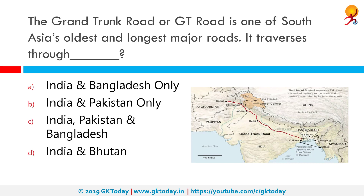The Grand Trunk Road or GT Road is one of South Asia's oldest and longest major roads. If you see the map, you can see it traverses through Bangladesh, India, and Pakistan. It was founded around the 3rd century BCE by the Mauryan empire of ancient India, and for more than two millennia it has linked the Indian subcontinent with Central Asia. It runs from Chittagong, Bangladesh, west to Haura, West Bengal in India, then across northern India through Delhi, passing from Amritsar. From there the road continues towards Lahore and Peshawar in Pakistan, finally terminating in Kabul, Afghanistan.